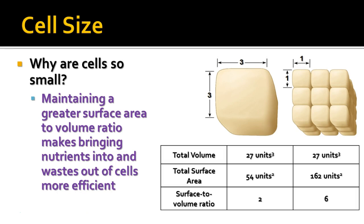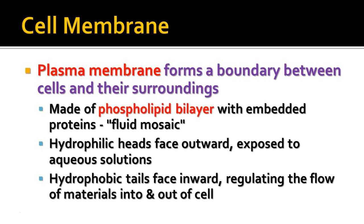The plasma membrane is another term for the cell membrane. Its function is to form a boundary between cells and their surroundings. It's made of a bilayer — a double layer — of phospholipids, with proteins embedded in it. We often call the plasma membrane a fluid mosaic. Those phospholipids have hydrophilic heads that mix well with water and hydrophobic fatty acid tails that are non-polar and do not like water. The hydrophilic heads face outward, exposed to solutions, and the hydrophobic tails face inward, helping regulate what comes into and out of the cell.